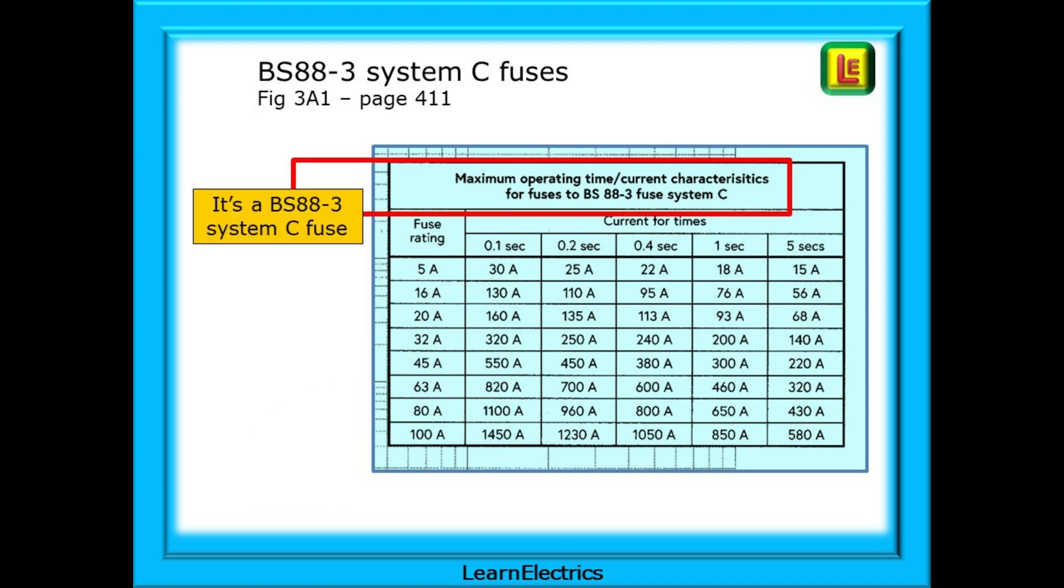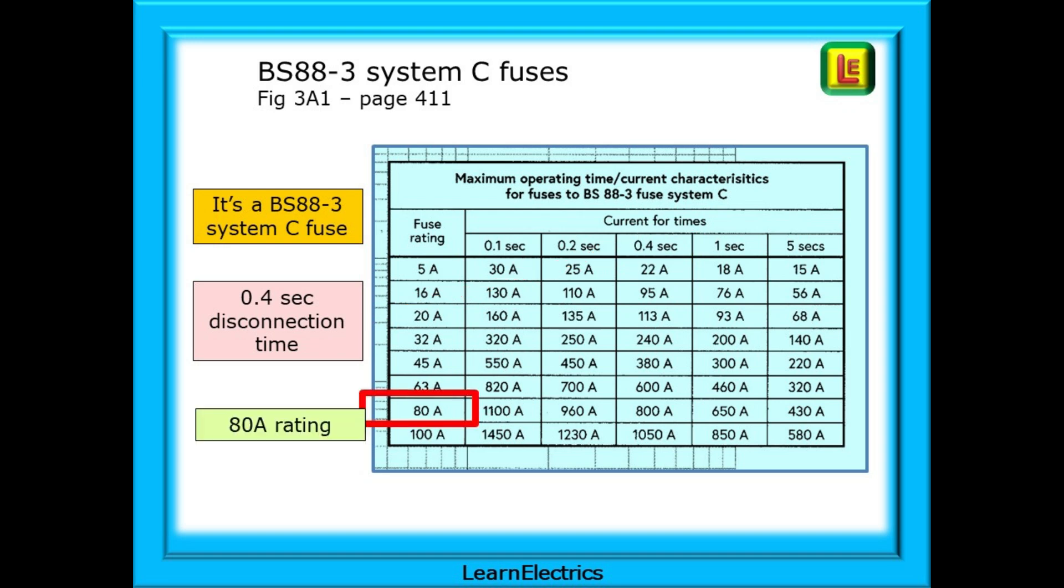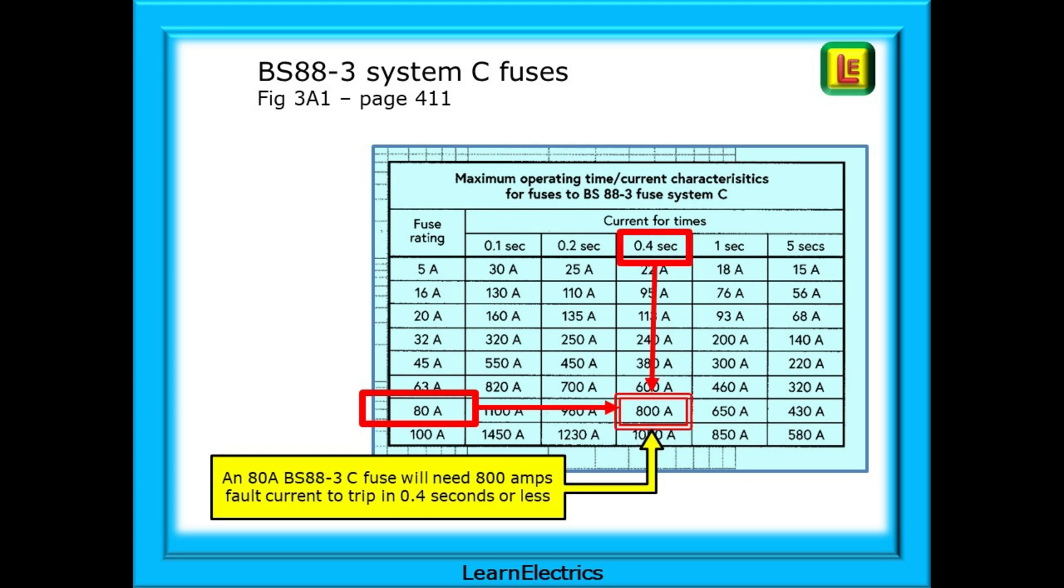Let's work our way to an answer. We have the correct table. The heading tells us that this is the chart for BS88-3 system C fuses. Make sure that you are starting out with the correct chart, the correct information. We need data for a 0.4 second disconnection time. So find the appropriate column and follow it down. On the left hand side of the chart is the available fuse ratings. Find the row for 80 amp fuses. Where the 0.4 second column and the 80 amp row cross each other is the answer that we need for the calculation. An 80 amp BS88-3 system C fuse will need 800 amps of fault current to trip in 0.4 seconds or less.